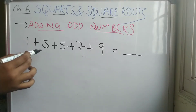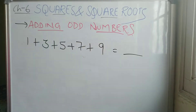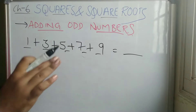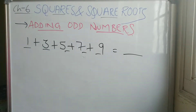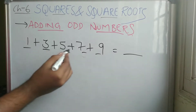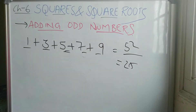One plus three is four, four plus five is nine, and so on. But instead of adding each one, we can do one thing: just count how many numbers there are — one, two, three, four, five. Five numbers, so five squared is your answer, which means 25 is your answer. Simple!